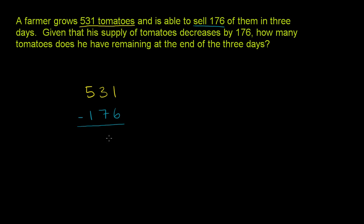That's how many he sells in three days. And they're asking us how much does he have left at the end of three days? So we just have to subtract those 176 from the amount that he grew. So it turns into this straight up subtraction problem.